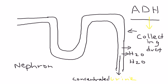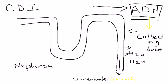The condition CDI involves ADH not being present in adequate amounts. When you don't have ADH in adequate amounts — either none or very little — this reabsorption of water does not happen. So instead of concentrated urine, you get very dilute urine. The water isn't coming back or being reabsorbed into your bloodstream; it's actually being urinated out. So you get very dilute urine in CDI.